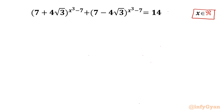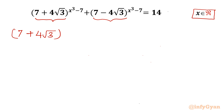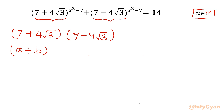Let's get started by considering the product between the given bases. One base is 7 + 4√3 and another base is 7 - 4√3. Let's check what will come out once we consider the product between the two. This result uses the identity: if we consider a as 7 and b as 4√3, then it is written as (a + b)(a - b).